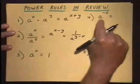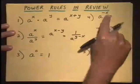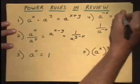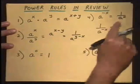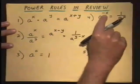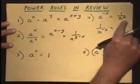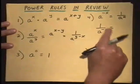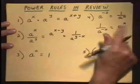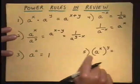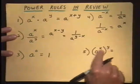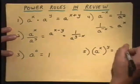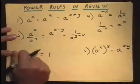Power rule four: if you have a negative exponent, to make the negative power into a positive one, you can take it downstairs. A negative power in the numerator becomes positive in the denominator, or a negative power in the denominator becomes positive in the numerator. Power rule five: whenever you have a power raised to a power, multiply the powers. So a to the x, raised to the y, is a to the x times y.